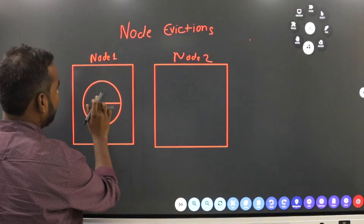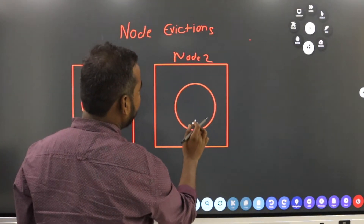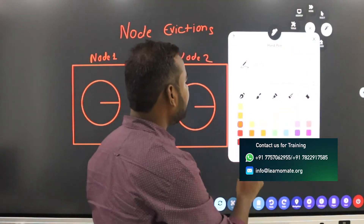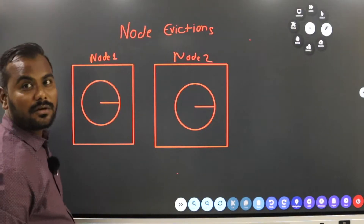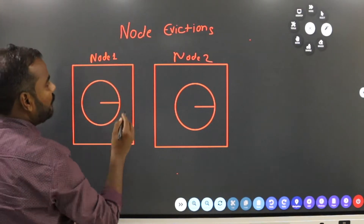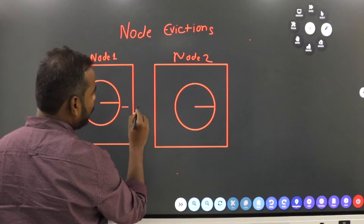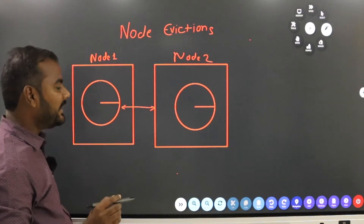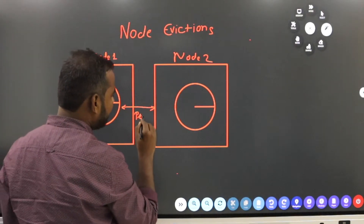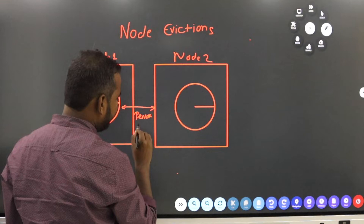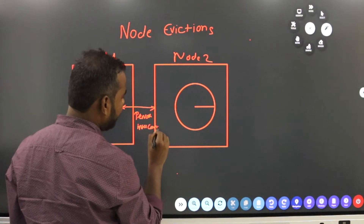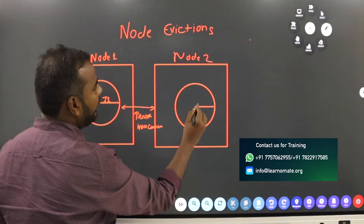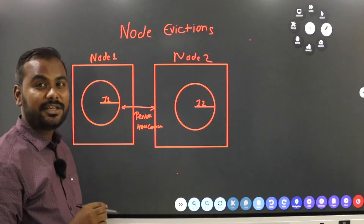My instance one is running here — this is my database instance one and this is my database instance two. When we have node one and node two, these two nodes communicate with each other through the private interconnect. There is a private network through which instance one and instance two share information with each other.